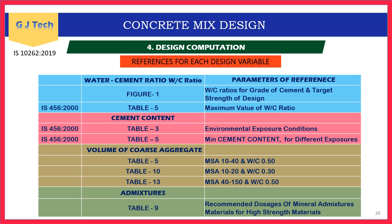Cement content is from Tables 3 and 5 — Table 3 gives exposure conditions from IS 456 and Table 5 gives minimum cement content. Volume of coarse aggregate proportion is from Tables 5, 10, and 13 for different maximum aggregate sizes and water-cement ratio values (0.5, 0.3, and 0.5 respectively). If design water-cement ratio differs, corrections must be applied. Table 9 gives mineral admixture dosage limits; chemical admixture dosage is per manufacturer prescription.